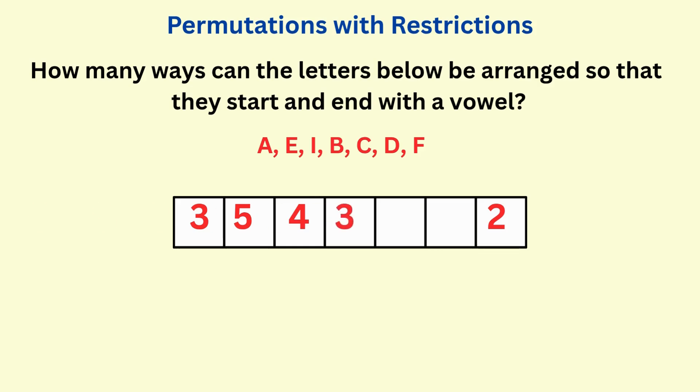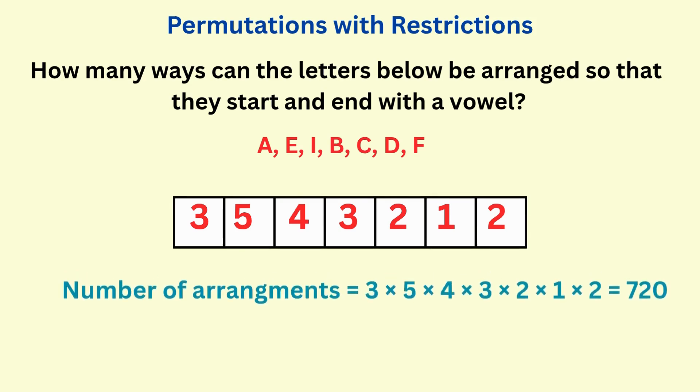Then three choices, then two choices. After six letters are placed, there should be only one choice left for the final box. Multiply the values in the box, and we get 720 unique arrangements with vowels at the start and at the end.